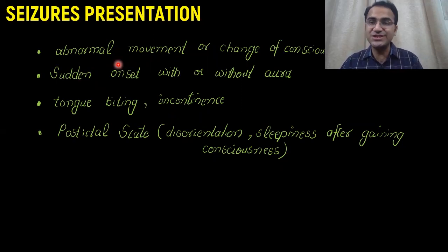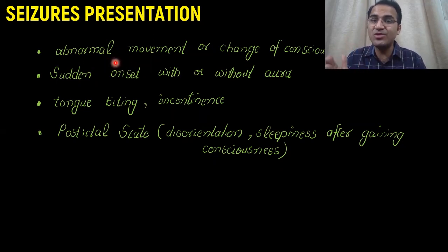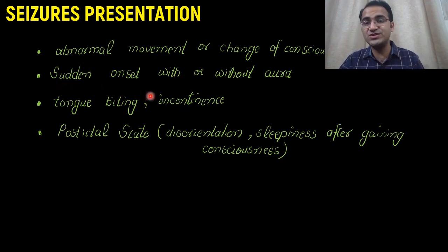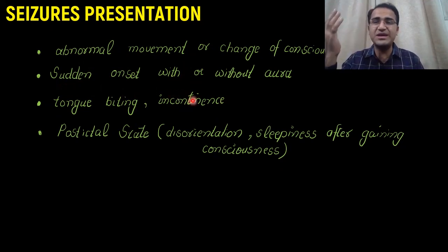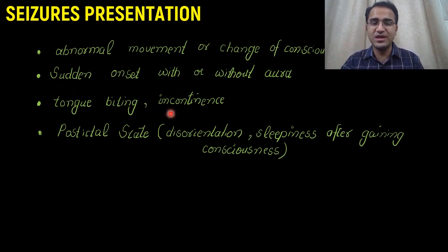A patient with seizure can present with abnormal movement, or sometimes without abnormal movement but with a change in consciousness. The patient will have sudden onset of seizures with or without an aura — aura can be any change in vision. There will be tongue biting and incontinence if it is a true seizure.